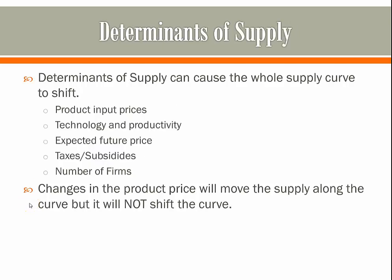The same idea applies to supply — supply can only change if one of the determinants of supply changes, though the determinants are different for supply. First, product input prices: if it costs more to make a good, supply will decrease. Second, technology and productivity: if technology or productivity improves, supply will increase because more goods can be produced. Third, taxes and subsidies: if the government taxes a good, supply decreases because producers make less money; if the government subsidizes a good, supply increases because companies get money from the government for producing it. Fourth, number of firms: if the number of firms increases, supply will increase.